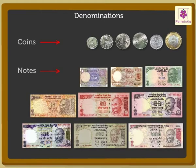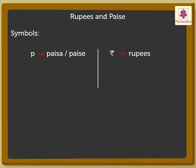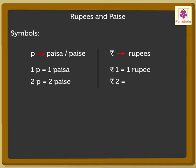In India, we have coins and notes of different denominations. Now, let's see the symbols for rupees and paise. We use P for paise and the Indian rupee sign for rupees. We read 1p as 1 paise, 2p as 2 paise, etc., and rupee 1 as 1 rupee, rupee 2 as 2 rupees.